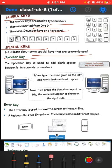The space bar key is used to add blank spaces between letters, words, or numbers. Two letters or two words or two sentences, you can use a blank space between them.